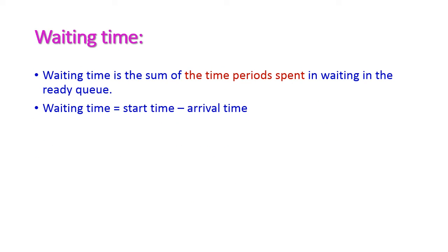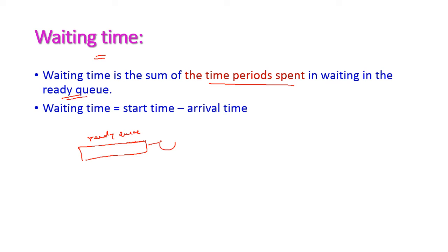The other criteria is waiting time. Waiting time is nothing but the sum of time periods spent waiting in the ready queue — that is, how much time the process will wait in the ready queue before it starts executing in the CPU. Waiting time is equal to start time minus arrival time.